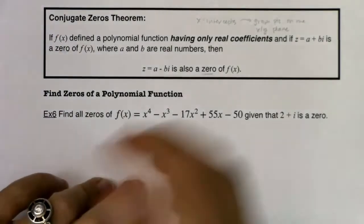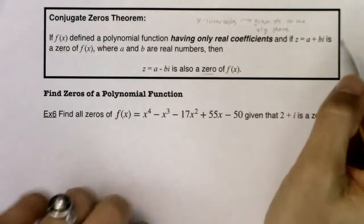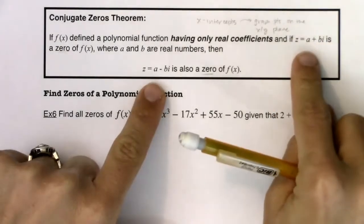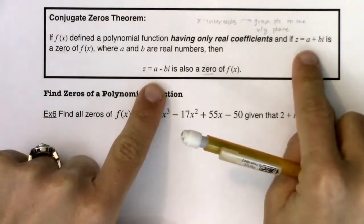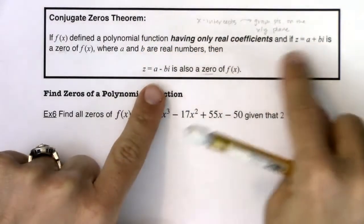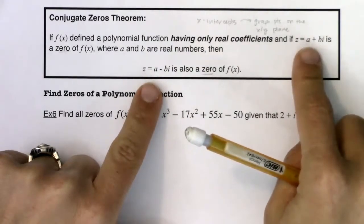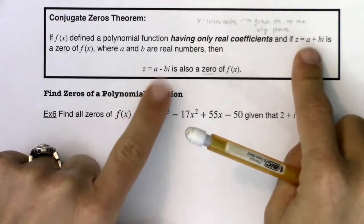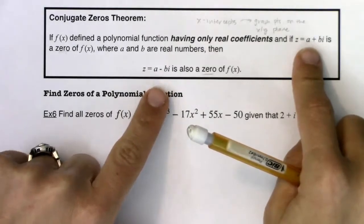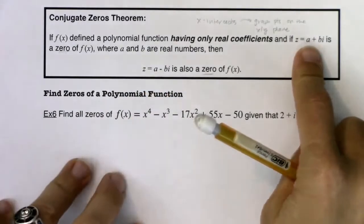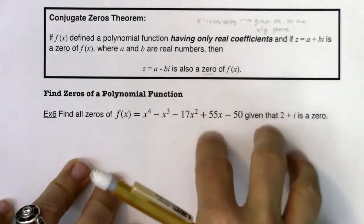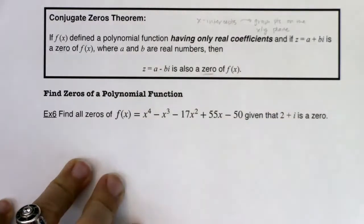If we just take a step back — what this theorem is trying to tell you is zeros for polynomials come in conjugate pairs. So if a plus bi is a zero, then automatically you know a minus bi is a zero. And once you enter the complex world of trying to find zeros, it just becomes that much more intricate and tricky.